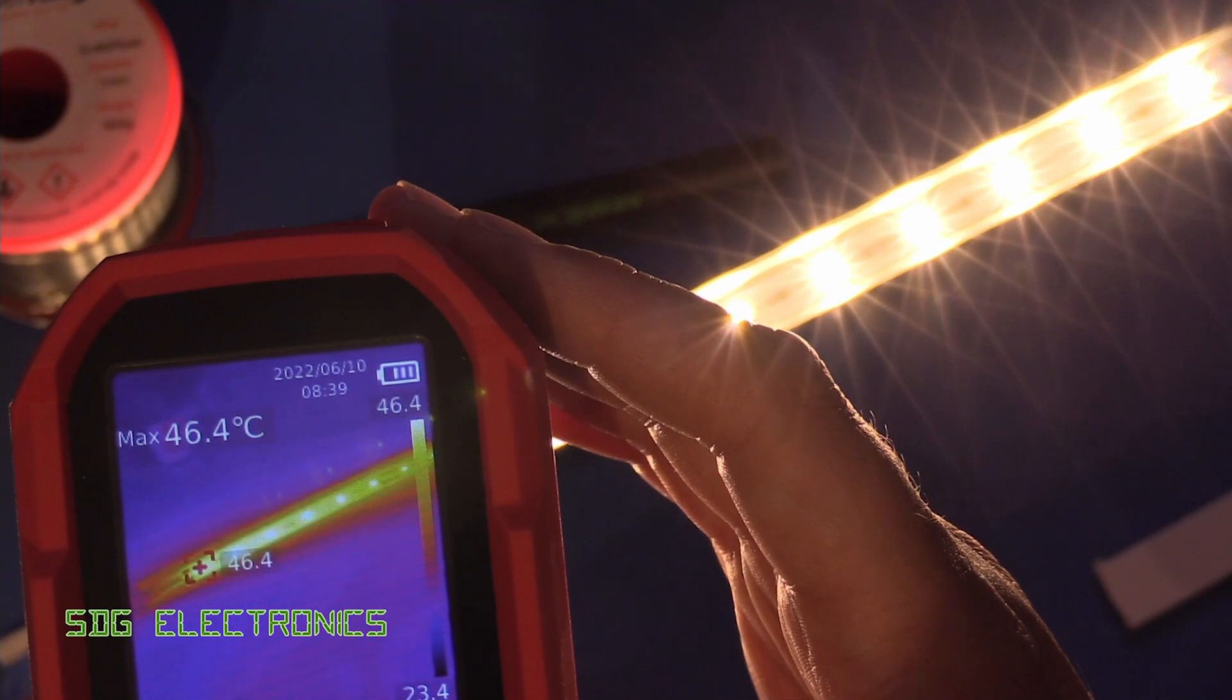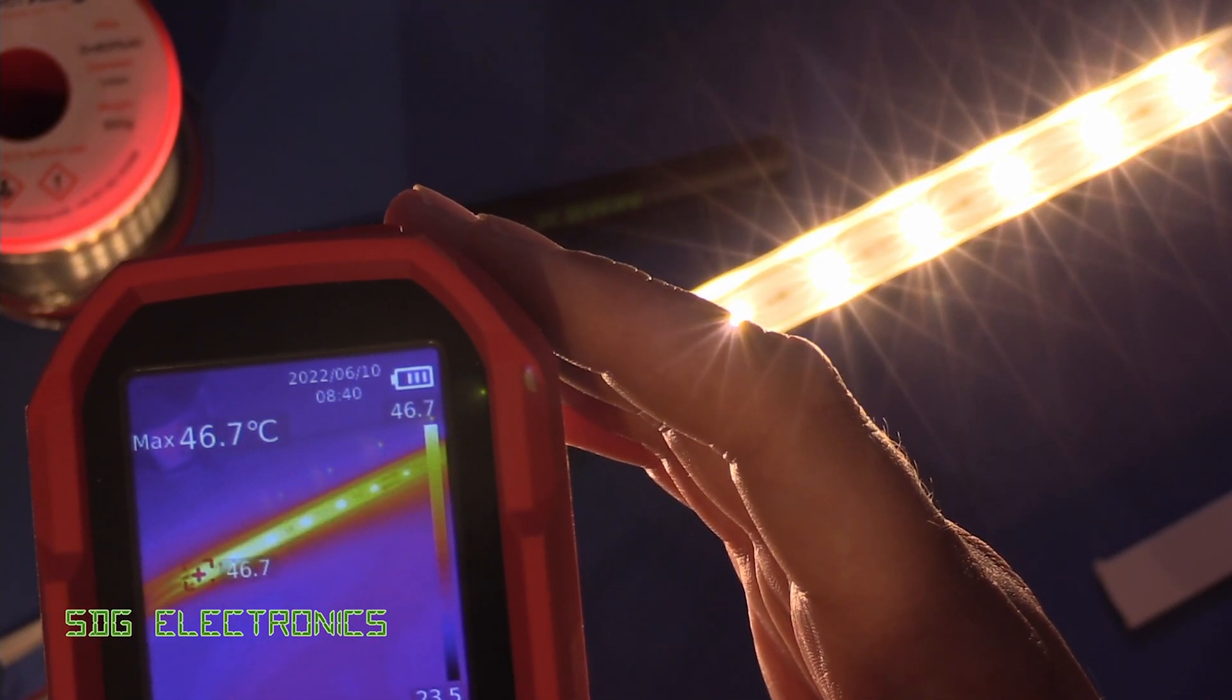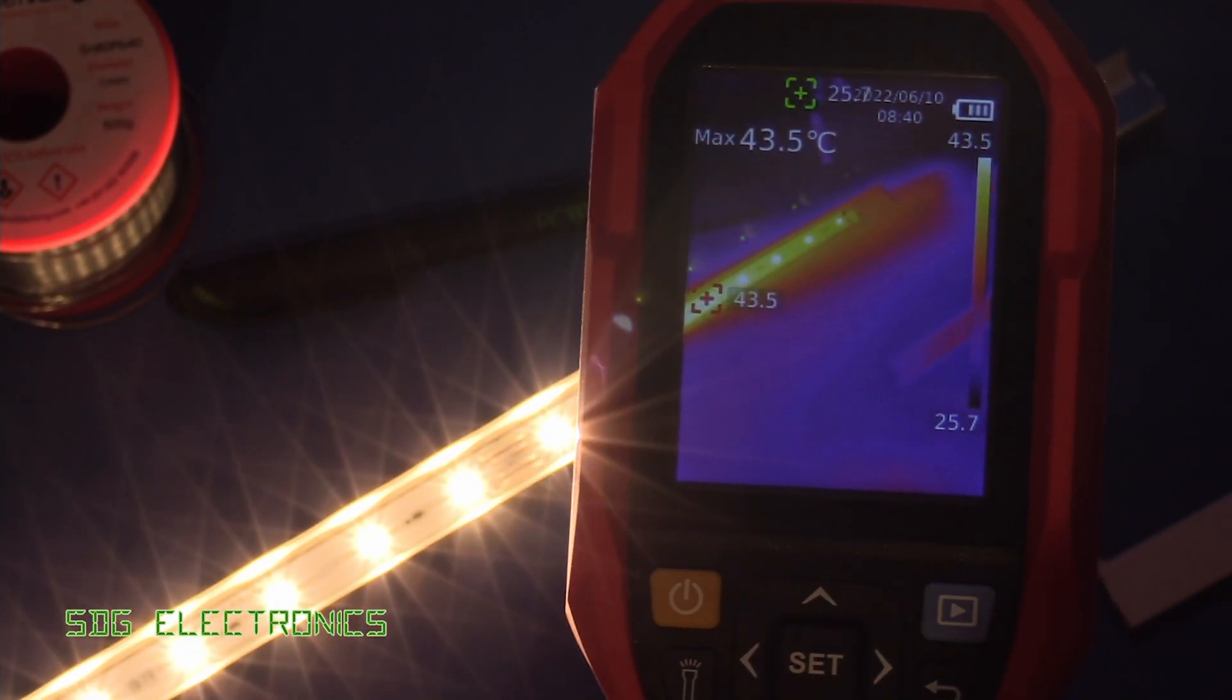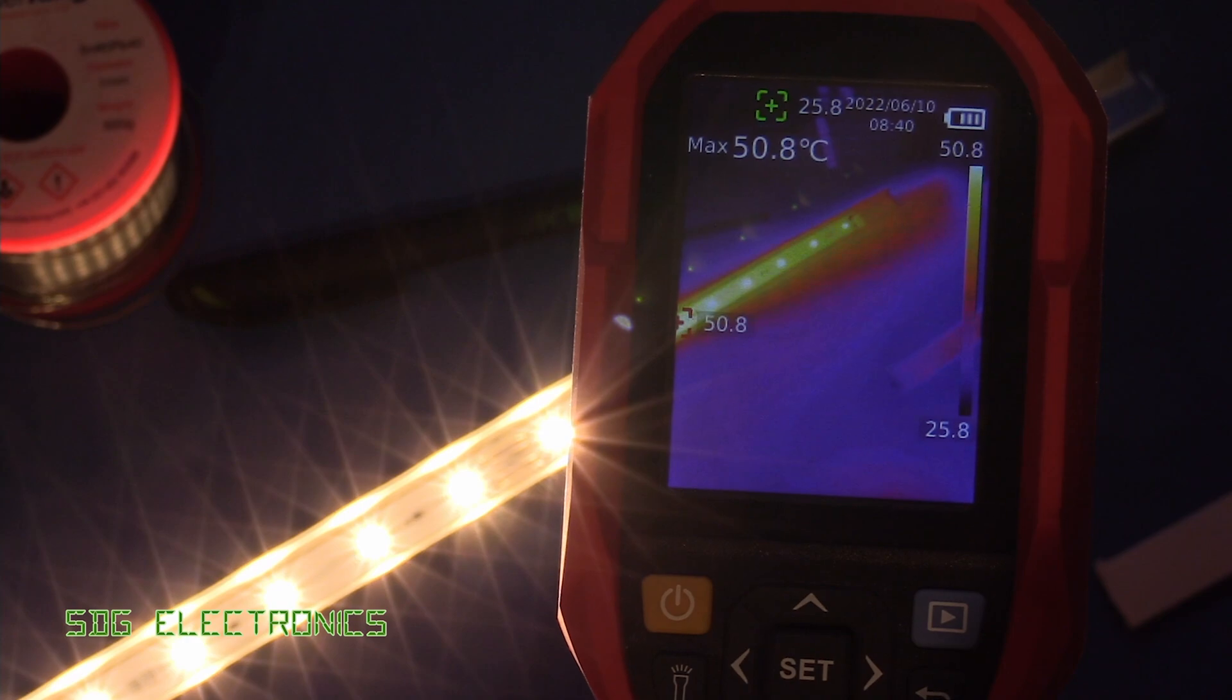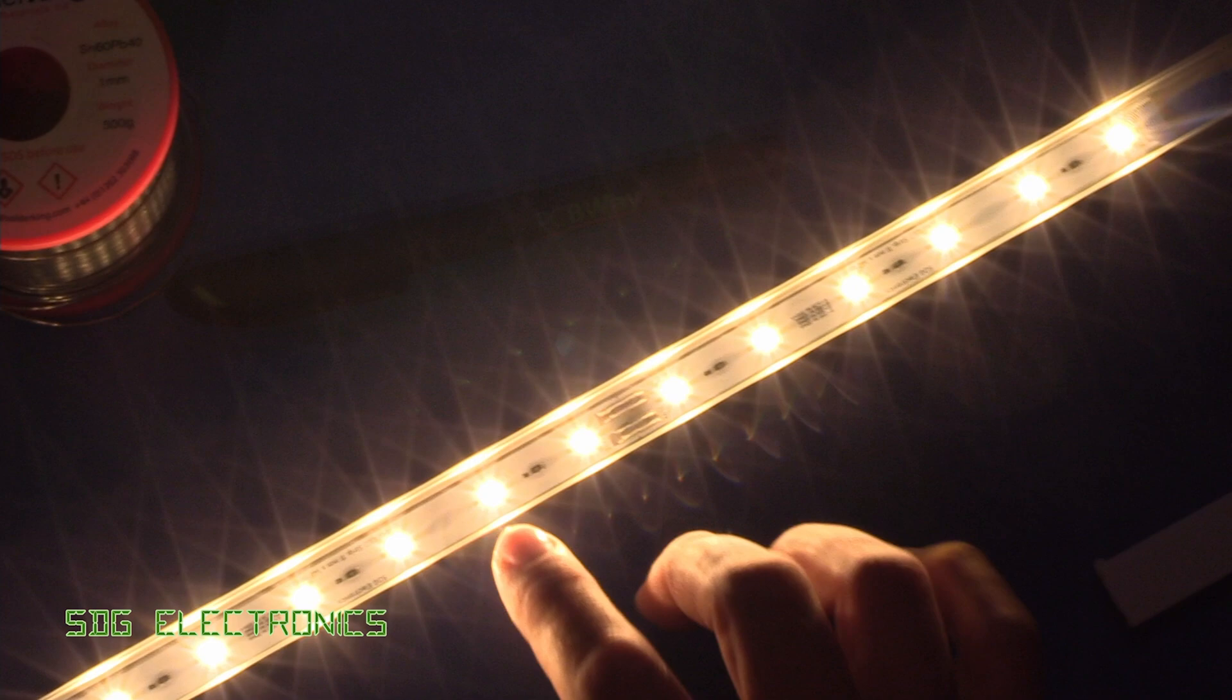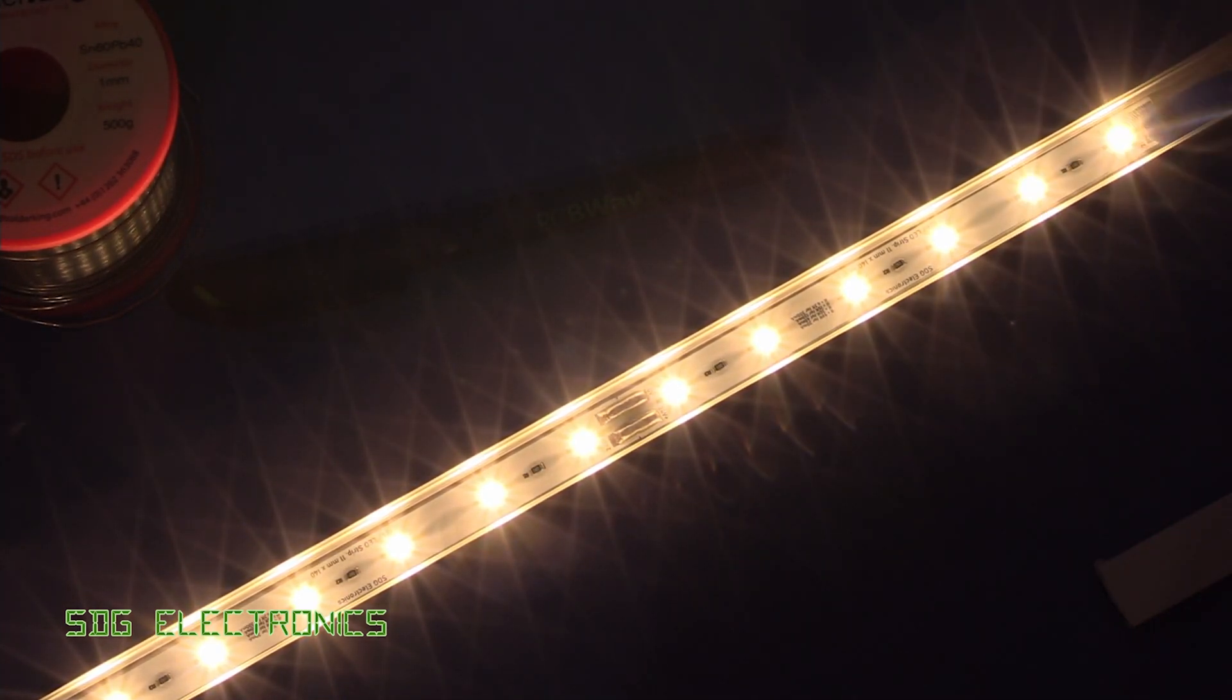Because at this end, we're getting about 46 degrees C at the hottest point. And at this end, closer to around 43 or so. So we're definitely getting a little bit of voltage drop. You can't really see the difference by eye between these two. But on the longer pieces of aluminium profile, I've actually put in sections where we can feed in additional power, so that we don't just have a gradual drop in brightness. It'll be fed from both ends and possibly in the middle.